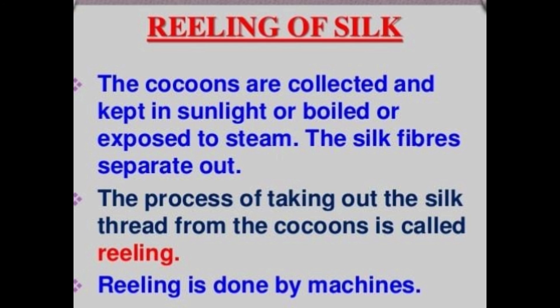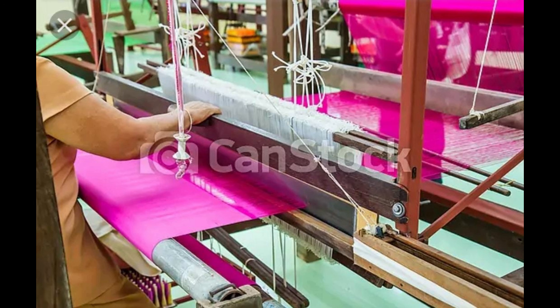After separating the silk fibers, they are spun into silk threads which are then woven into cloths by weavers — such as sarees and different types of garments. This is how we get silk fibers used in different types of dresses.